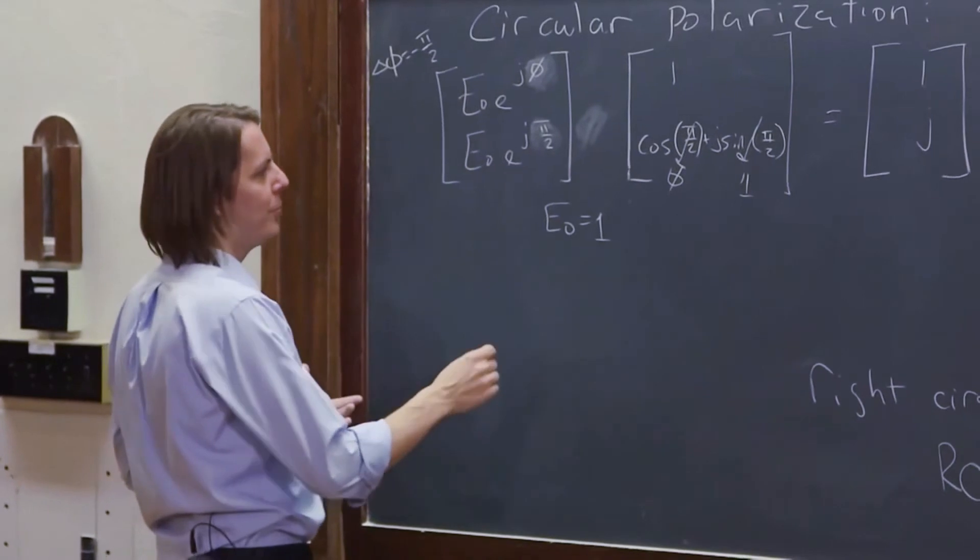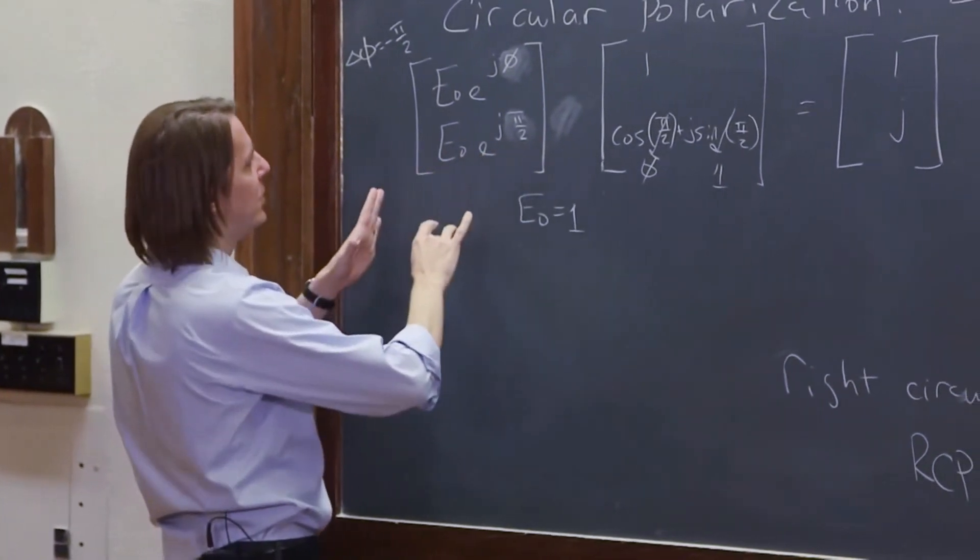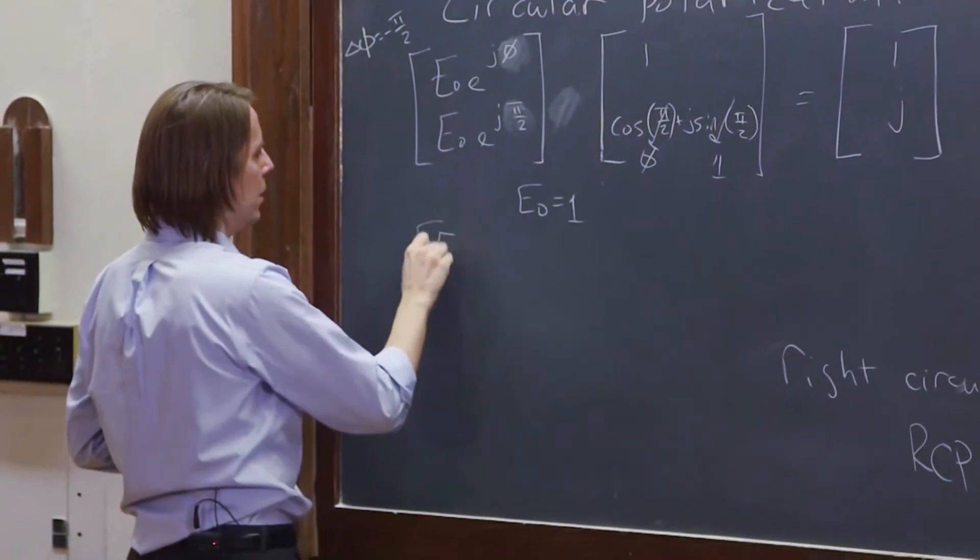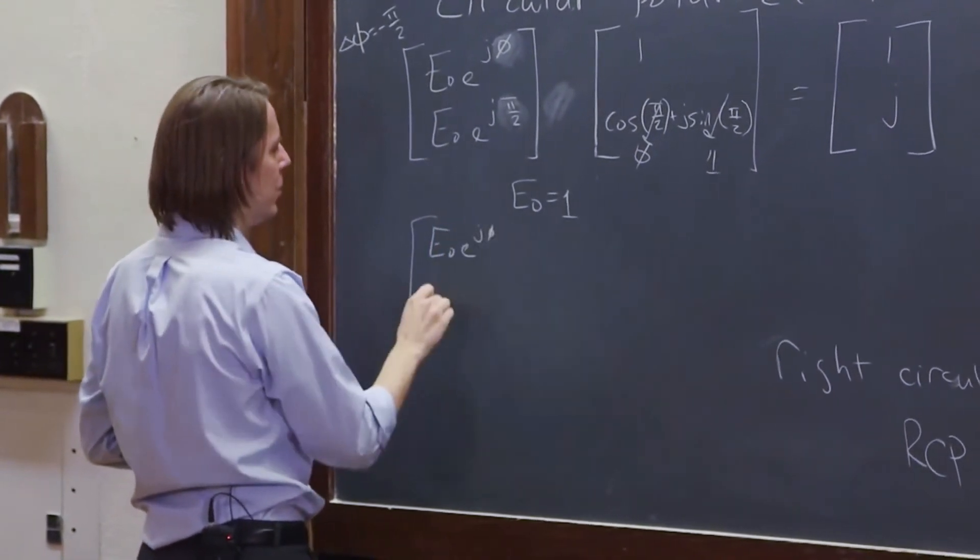Now let's do plus pi over 2, and we can jump in. I'll just do it a little smaller, e to the j 0.